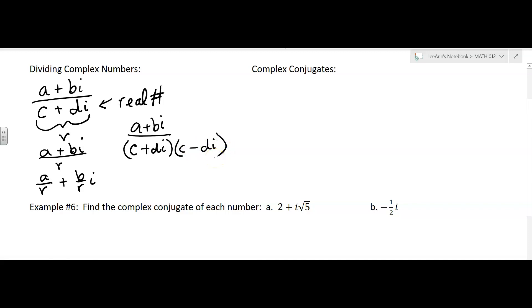So remember back when you were working with polynomials, and you would have this situation that is like the difference of squares, right? And so the middle term drops out. So the i part drops out and you just have the c squared. And then you have the d squared i squared, but i squared is a real number.